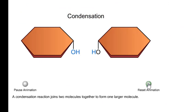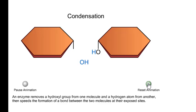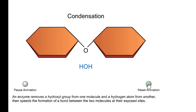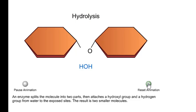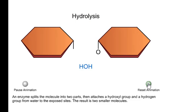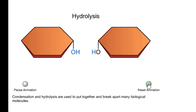A condensation reaction joins two molecules together to form one larger molecule. An enzyme removes a hydroxyl group from one molecule and a hydrogen atom from another, then speeds the formation of a bond between the two molecules at their exposed sites. Typically, the discarded atoms join to form a molecule of water. Hydrolysis is a type of cleavage reaction — it's like condensation in reverse. An enzyme splits the molecule into two parts, then attaches a hydroxyl group and a hydrogen group from water to the exposed sites, resulting in two smaller molecules.